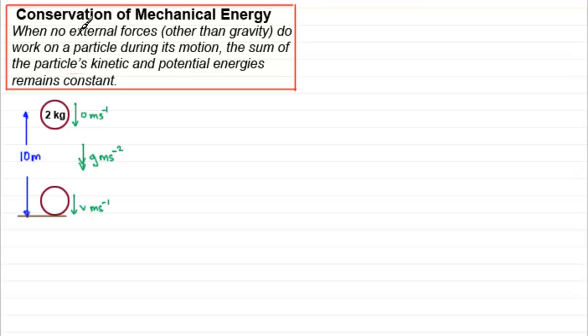What it is is that when we have no external forces other than gravity doing work on a particle during its motion, the sum of the particle's kinetic and potential energies remains constant. I can use this principle here because if I assume that there's no air resistance, no work would be done against any resistance, we'd just have the force due to gravity acting on our particle.